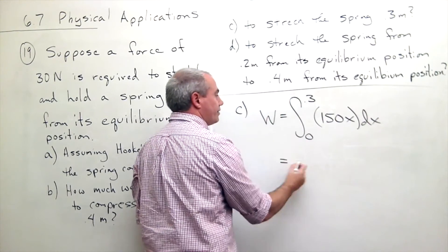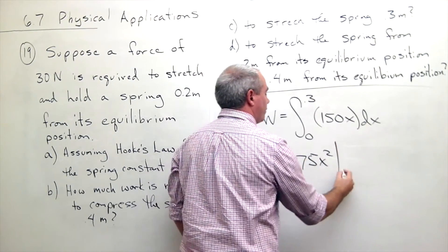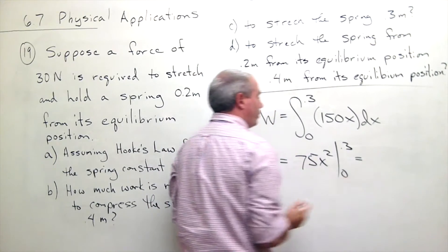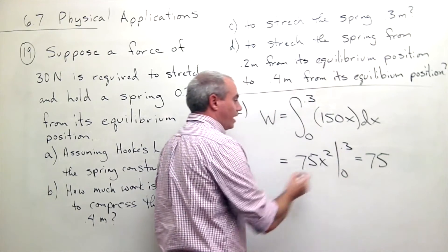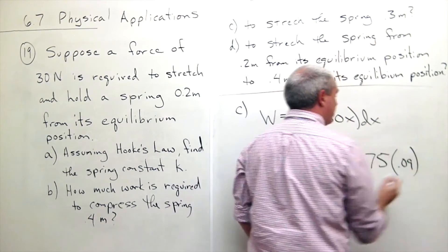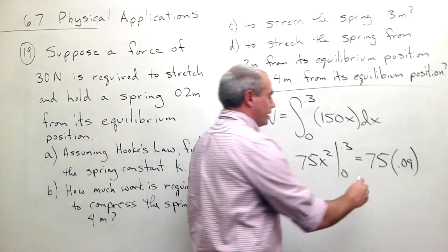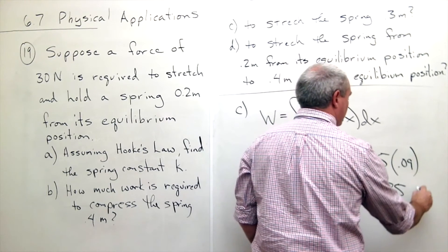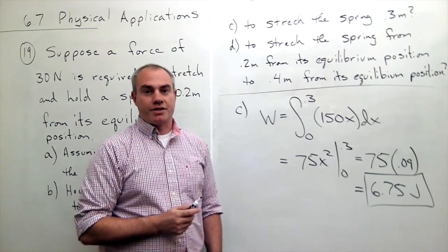The antiderivative of 150X is 75 X squared evaluated from 0 to 0.3. We plug in the 0.3 here and we get 75 times 0.3 squared is 0.09, and then 75 times 0.09 is 6.75 joules. So that's the answer to part C.